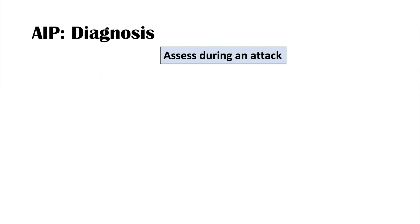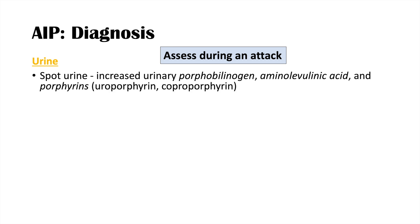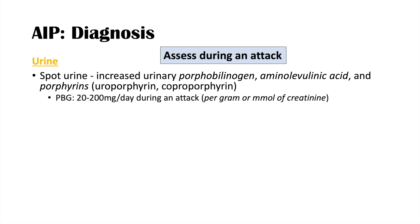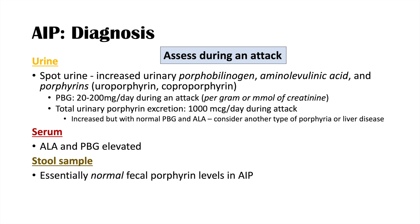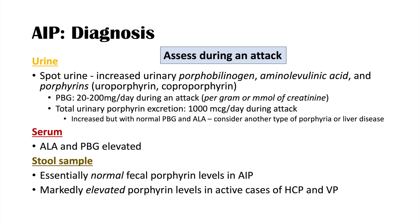AIP is diagnosed during an attack. A spot urine shows increased urinary porphobilinogen, aminolevulinic acid, and porphyrins like uroporphyrin and coproporphyrin. We can see 20 to 200 milligrams per day of porphobilinogen during an attack, and total urinary porphyrin excretion can be up to 1,000 micrograms per day. If we see increased urinary porphyrins with normal PBG and ALA, we must consider other porphyria types or liver disease. Serum will show elevated ALA and PBG. A stool sample showing normal fecal porphyrin levels distinguishes AIP from HCP and variegate porphyria, which show markedly elevated fecal porphyrin levels. Erythrocyte PBGD activity measurement can also be performed.